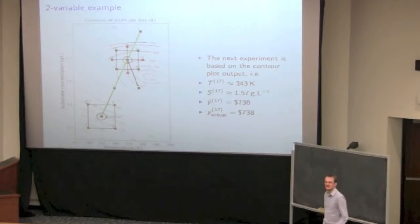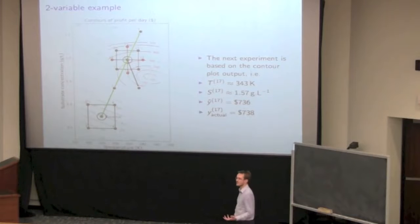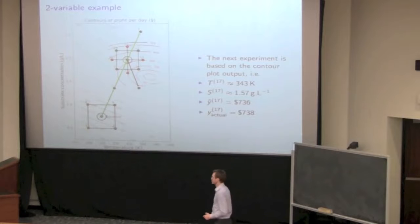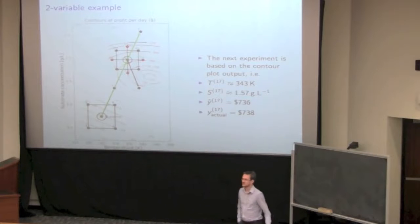It's easy enough to move around a variable that's continuous, but a categorical variable, for example, using catalyst from one supplier versus a catalyst from another supplier, or a mixing tank with baffles and a mixing tank without baffles, how would you optimize with such a variable?